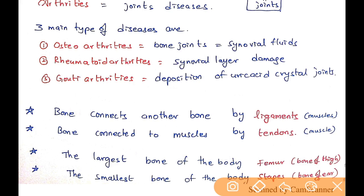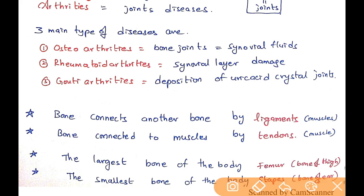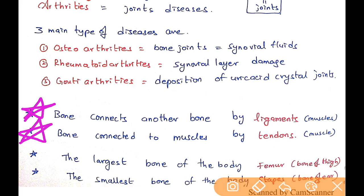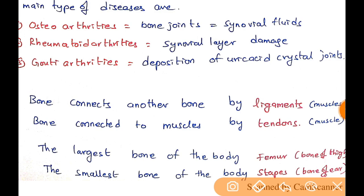When one bone and another bone are connected, they are connected by ligaments. When a bone and a muscle are connected, they are connected by tendons. This is very important for exams: ligaments connect bone to bone; tendons connect bone to muscle. The largest bone in the body is the femur (thigh bone). The smallest bone is the stapes, which is in the ear.